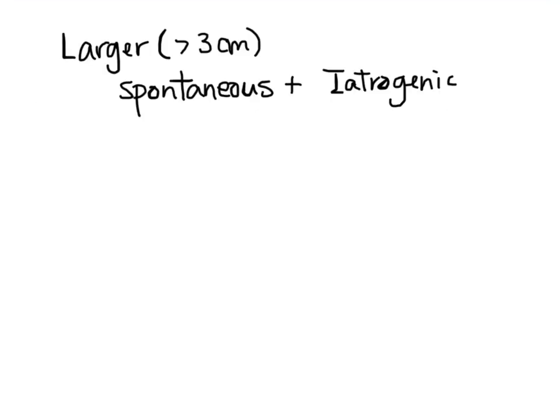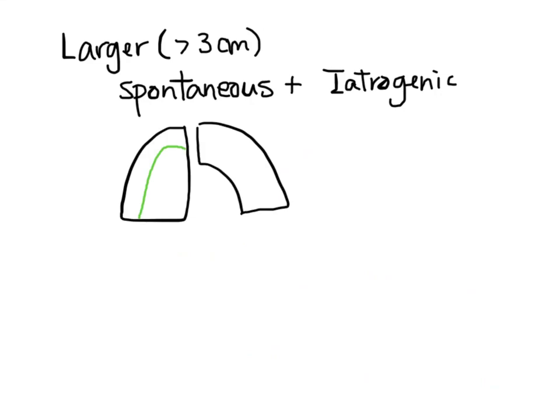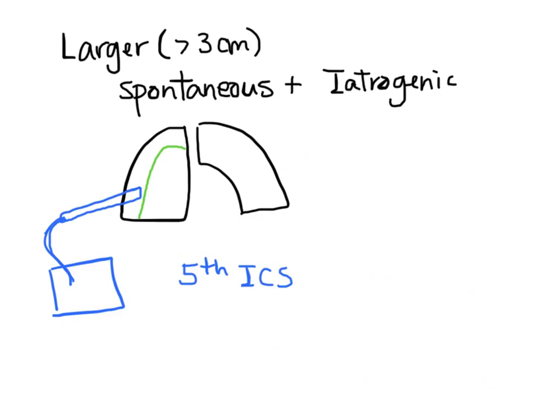For larger spontaneous and iatrogenic pneumothoraces, we need to release the air because the patient is often symptomatic. We do this by inserting a chest tube to drain the air. The chest tube is inserted on the affected side in the 5th intercostal space in the anterior axillary line, which drains out the air that has accumulated between the two pleura.